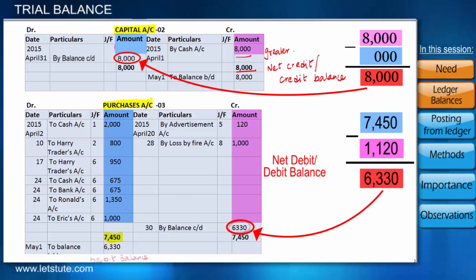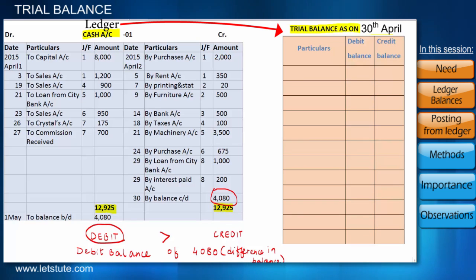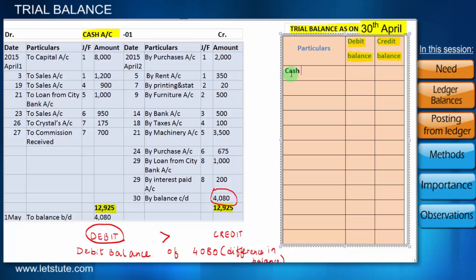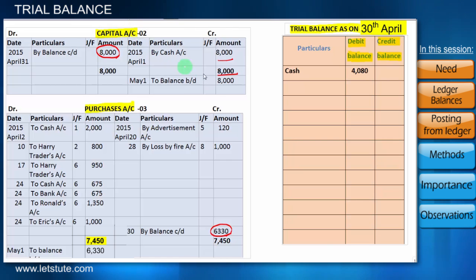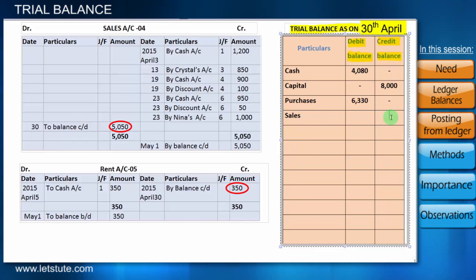That was quite simple. Shall we proceed to transfer these ledger balances into the trial balance? We will make a monthly trial balance on the 30th of April and list all our balances — debit balances and credit balances. Cash showed a debit balance of 4,080; capital a credit balance of 8,000; purchases a debit balance of 6,330; sales a credit balance of 5,050. Similarly, we have posted each account's balance.